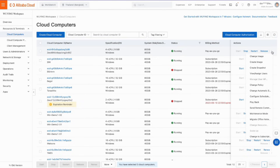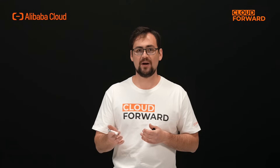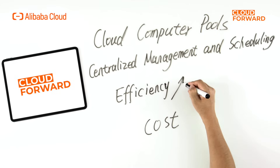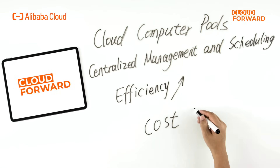As you can see, you have everything you need here in the console to manage your cloud computers, including basic actions like startup, shutdown, restart, and release, and advanced tools such as scheduled tasks, upscale and downscale, office network migration, and more. Additionally, cloud computer pools — formerly known as desktop groups — are a group of pooled cloud computers that provide centralized management and scheduling, bringing higher efficiency and lower cost.